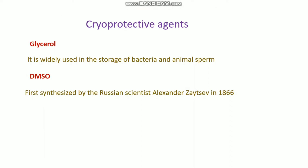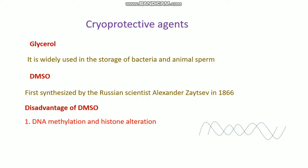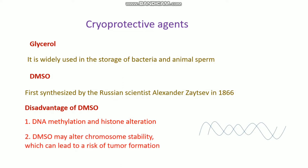DMSO was first synthesized by the Russian scientist Alexander Jacev in 1866 and is mainly used for mammalian cell cryopreservation. There are some disadvantages of DMSO: DNA methylation and histone alteration, and DMSO may also alter chromosome stability which can lead to a risk of tumor formation. However, DMSO is widely used because it is very cheap, available, and has very low toxicity.